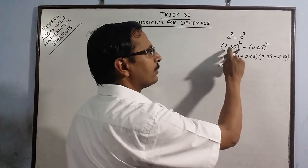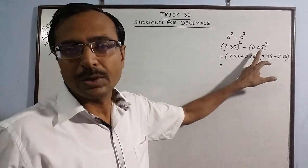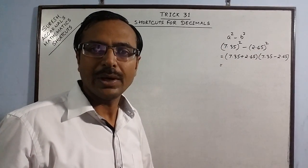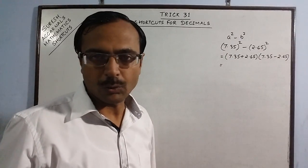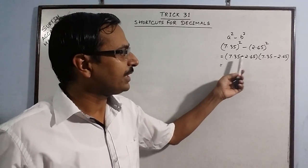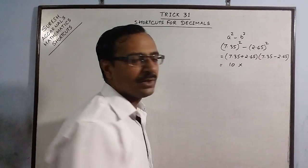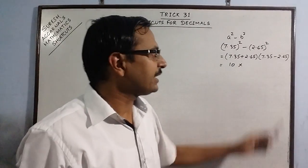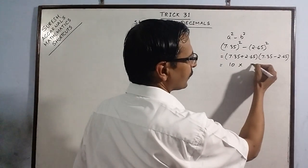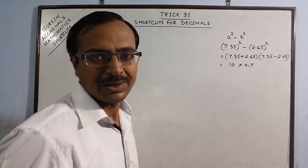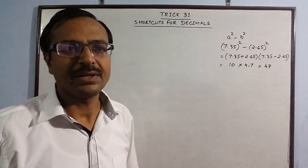These two numbers, which are normally given in competitive exams, have a sum that is a round figure to make arriving at the answer easy, or the difference may be a round figure. Here we observe that 7.35 and 2.65 add up to 10. So this is 10, and now you are left with only the small calculation of getting the difference of 7.35 and 2.65, which is 4.7. Multiplication by 10 is very easy, so 47 is your answer.